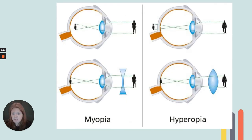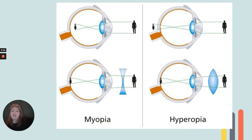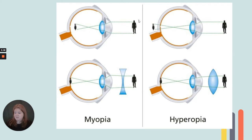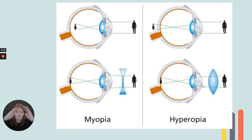Here's what happens with two types of vision. Myopia — I always remember I can see my stuff clear, so you're nearsighted. Hyperopia — you're farsighted. In both cases, the image does not get focused on the retina, so the image ends up being blurry. With myopia, you correct it with concave lenses, and hyperopia you can correct with convex lenses.